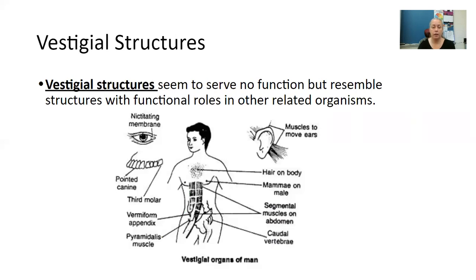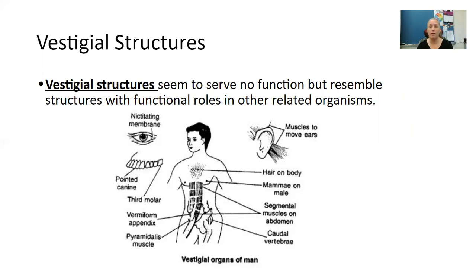Lastly, we have something called vestigial structures. Vestigial structures seem to serve no function, but resemble structures with functional roles in other related organisms. For example, muscles to move our ears — we can move our ears slightly, but we can't move them like some other animals can, where they can turn them all the way. You see this with cats, dogs, and several other species. We also have pointed canines. We don't really need those because we are not going out and attacking another species with our mouths. Here are all kinds of different things that we have that have different functional roles in other organisms.